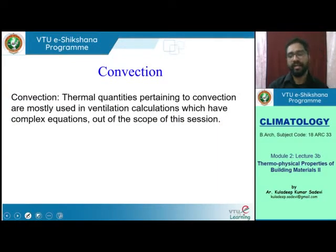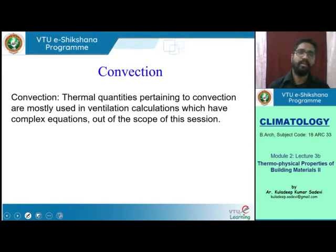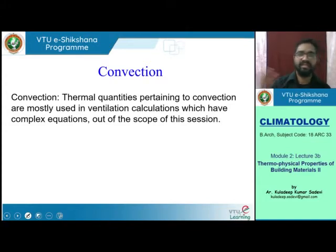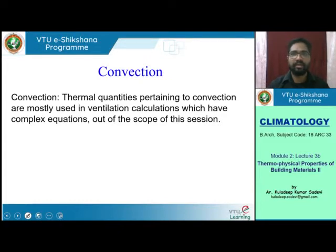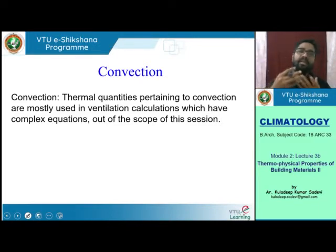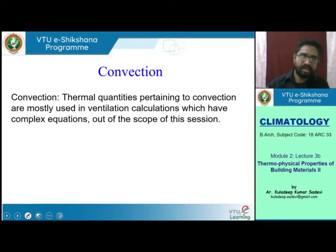That covers conduction, where U value talks about overall thermal transmittance. When it comes to convection, it is about heat flow happening through air movement from inside to outside. Thermal quantities with respect to convective heat flow depend on the amount of air movement from indoor to outdoor and the temperature difference from outdoor to indoor — it is a very dynamic calculation process where temperatures keep changing and air movement is not directly measurable unless you have a specific fan moving a measured quantity of air.